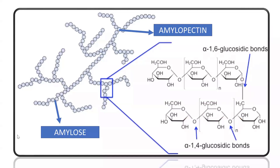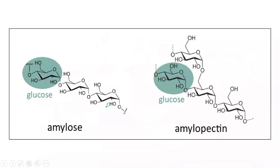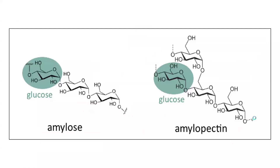It is very important to know the difference between amylose and amylopectin. Amylose is linear while amylopectin is branched. That is where the slides end for today. Ladies and gentlemen, if you have questions, you can ask. Thank you.